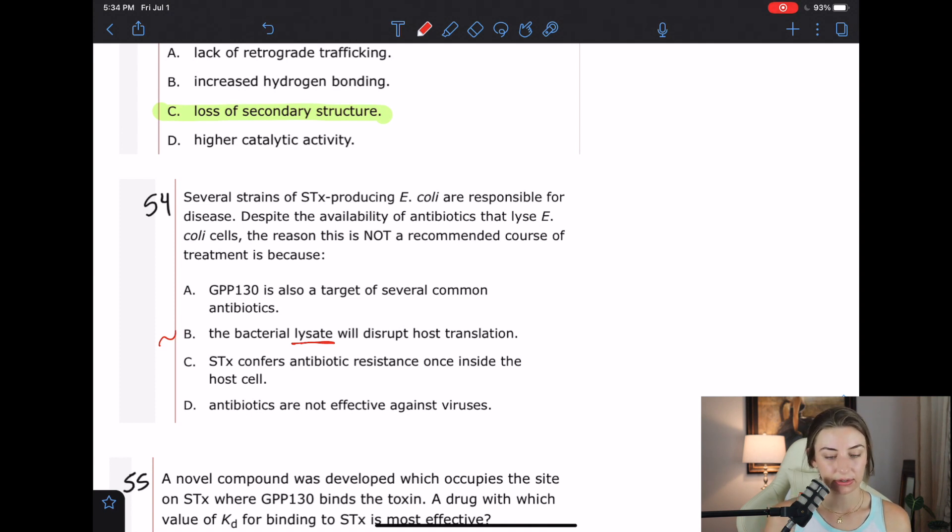D, antibiotics are not effective against viruses. So we're not talking about viruses. Shiga toxin is not a virus. E. coli is bacteria. So not a virus. So I think B is going to be our best answer here.